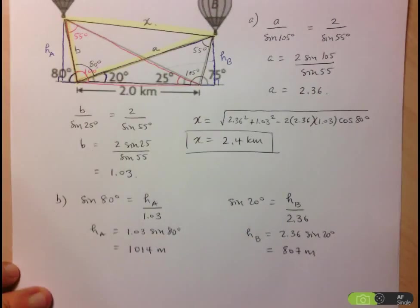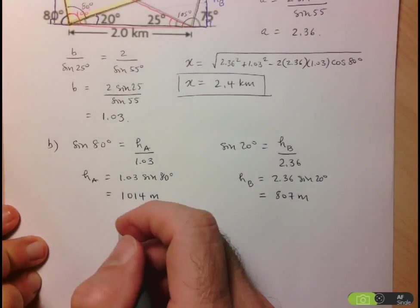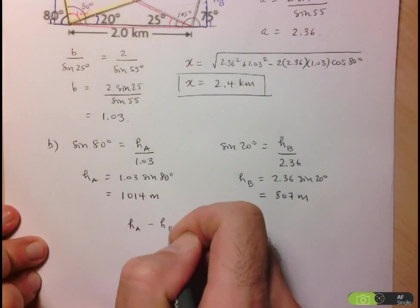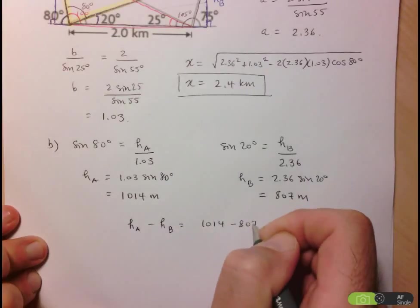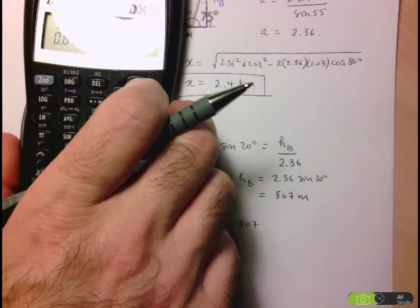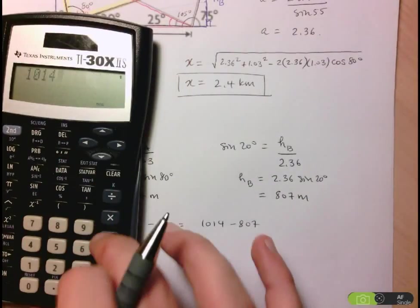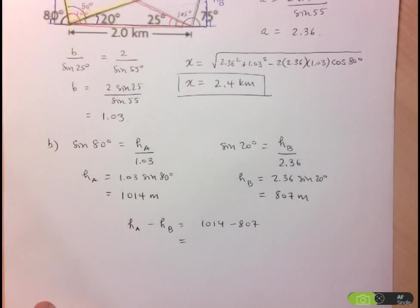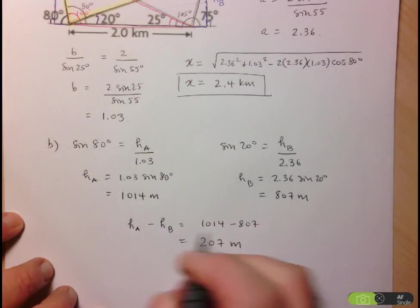And now the difference in the heights will be, well, the higher one is A. So HA minus HB is equal to 1014 minus 807 is equal to 207 meters. And there we go.